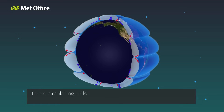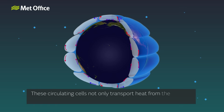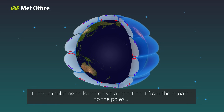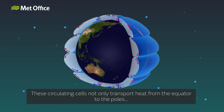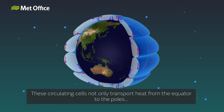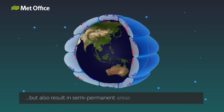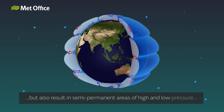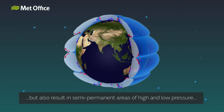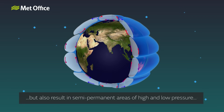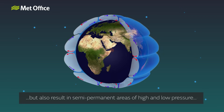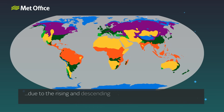These circulating cells not only transport heat from the equator to the poles, but also result in semi-permanent areas of high and low pressure, due to the rising and descending parts of the circulation cells, giving us our climatic zones.